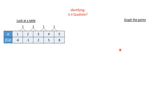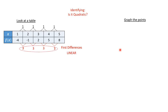Second, we look at the y-values and check how much they're going up. In our case, from negative 4 to negative 1 is plus 3, negative 1 to 2 is plus 3, 2 to 5 is plus 3, and 5 to 8 is plus 3. These are called the first differences. If the first differences are all the same, it means it's linear — we saw that in Chapter 2.